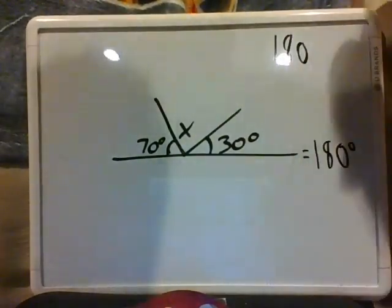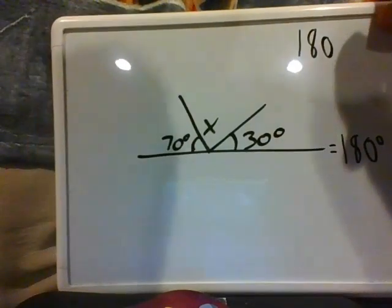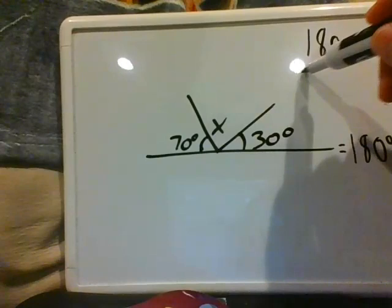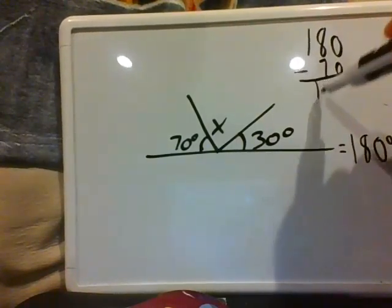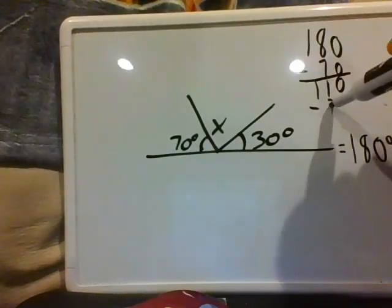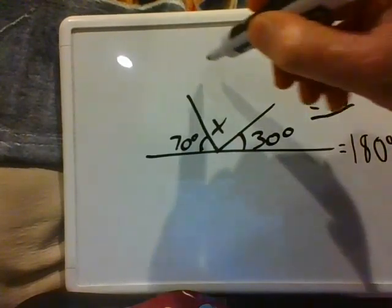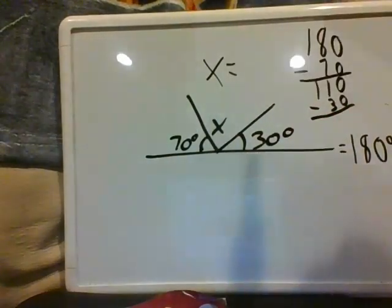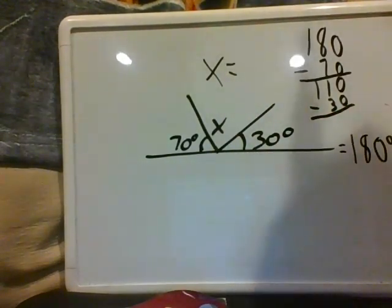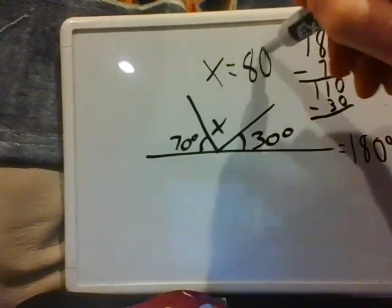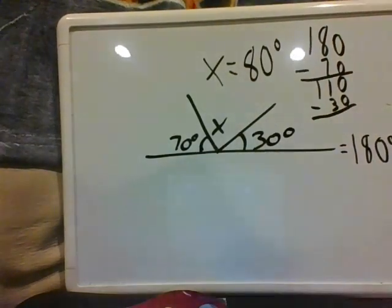So up here: 180 minus the 70 — that's 110 — and then take away the 30. So that is going to make X equal to... X equals 80 degrees. So X equals 80 in that case. There we had a supplementary line.